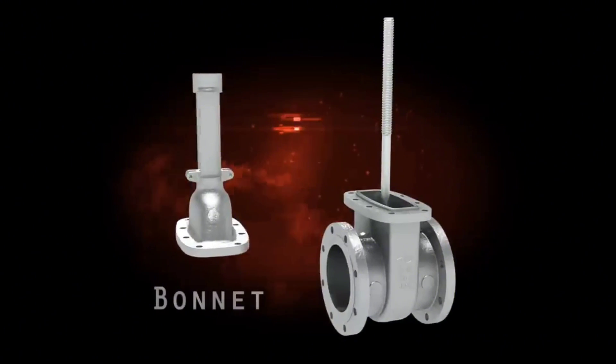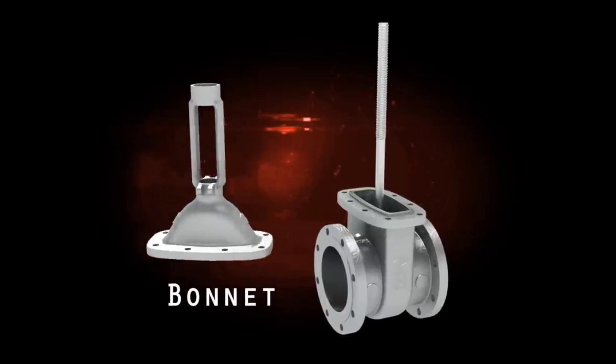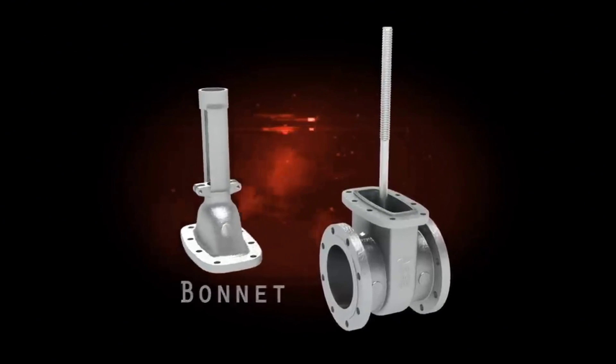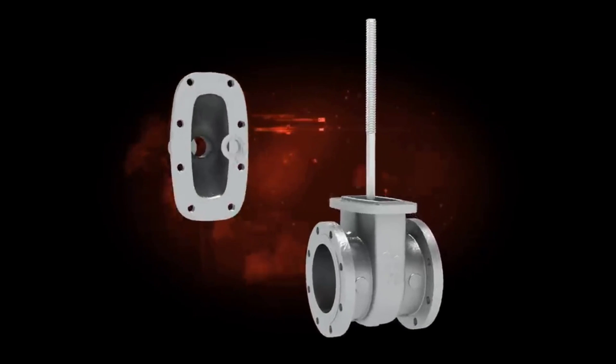Bonnet. The bonnet provides another pressure retaining part that encloses and protects a gate valve stem and wedge. Generally, it connects and disconnects from the body to provide access for the repair or maintenance of internal components.